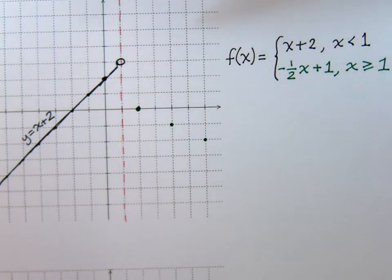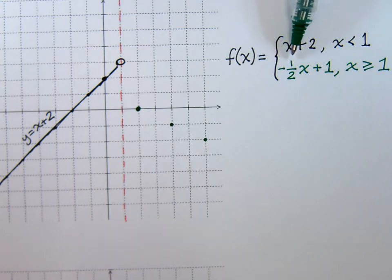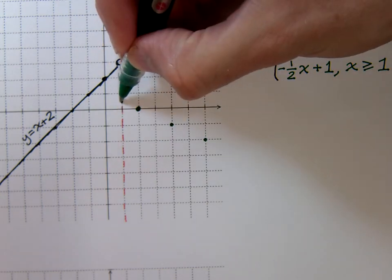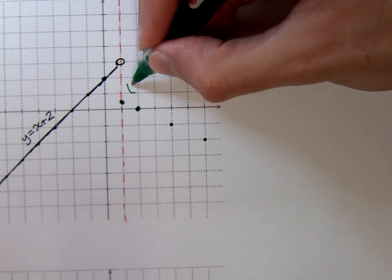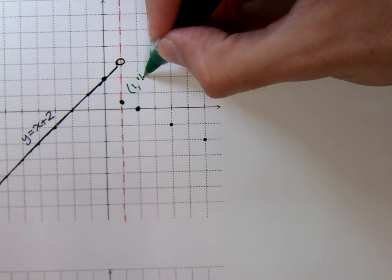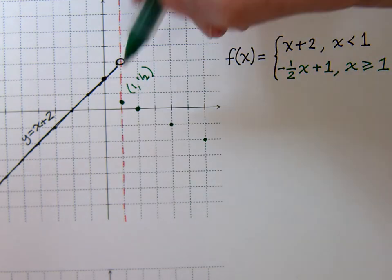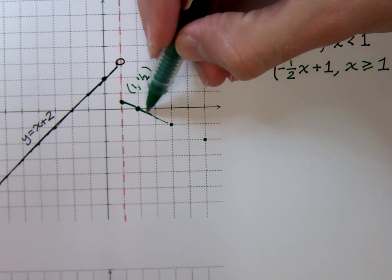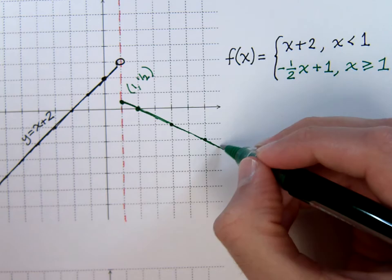So you see, he's going to have that same shape of the regular negative 1 half x plus 1, but he can't go beyond this barrier. In fact, he's going to hit it right here. And the coordinates for this point would actually be 1, 1 half. So once we get to 1, my function behaves just like negative 1 half x plus 1.